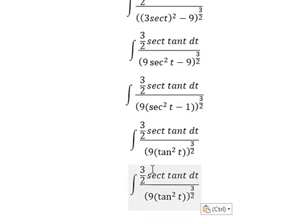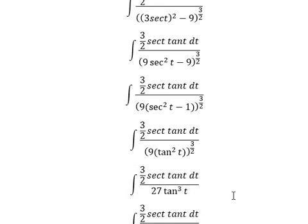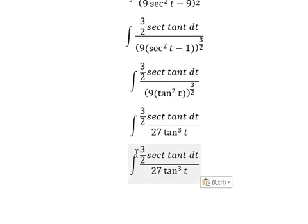So this one is about tan t square. So number 9 with the power 3 over 2, you will have about 27. Tan t square to the power of 3 over 2, we will have about 27 times t to the power of 3. So 3 over 2 divided by number 27, we got about 1 over 18.